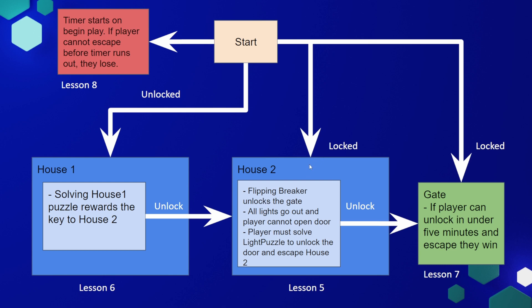House two will also be locked, which means the player needs to find a way to unlock it in house one. In house one there will be a puzzle that the player will need to solve in order to unlock house two. And this is going to be defined in lesson six. When the player gets into house two, they're going to flip the breaker to unlock the gate. But this will also lock the player inside house two, and the player is going to need to solve another puzzle in order to escape house two.